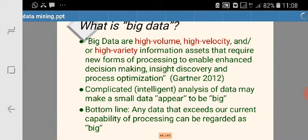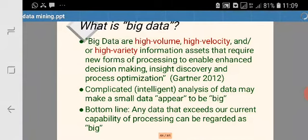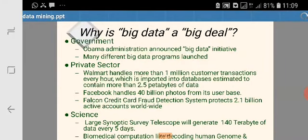A complicated intelligent analysis can make small data appear to be big. If we are considering one GB of data but the data is complex or complicated, and we have to perform complex analysis on that one GB of data using any algorithm, then that one GB will also be considered as big data because it is beyond the processing limit of the algorithm. So the bottom line is: any data that exceeds our current capabilities of processing can be regarded as big data.